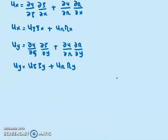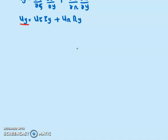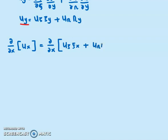Since this is second order, we need to find U_xx, U_xy, and U_yy. We already found U_x and U_y. To find U_xx, we take the partial derivative with respect to X of U_x, which is U_ψ·ψ_x + U_η·η_x. We need to use the product rule here.